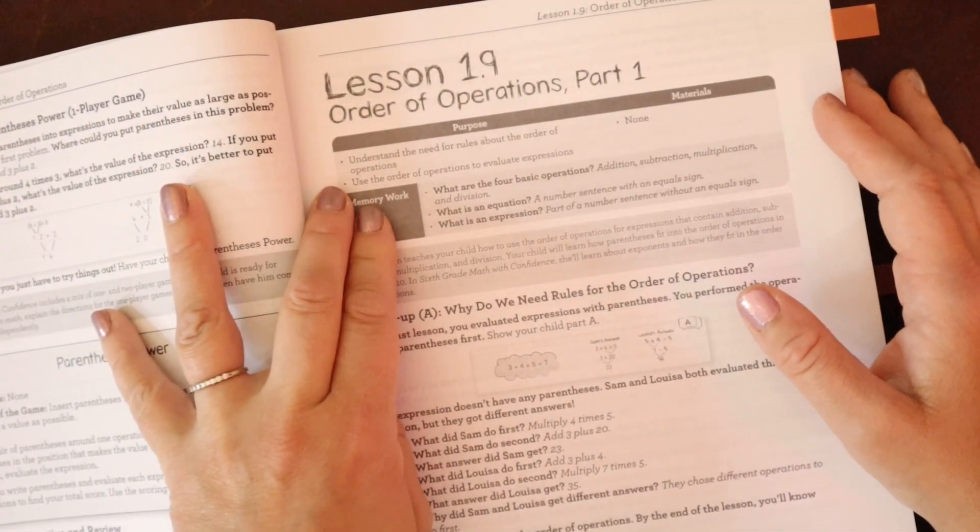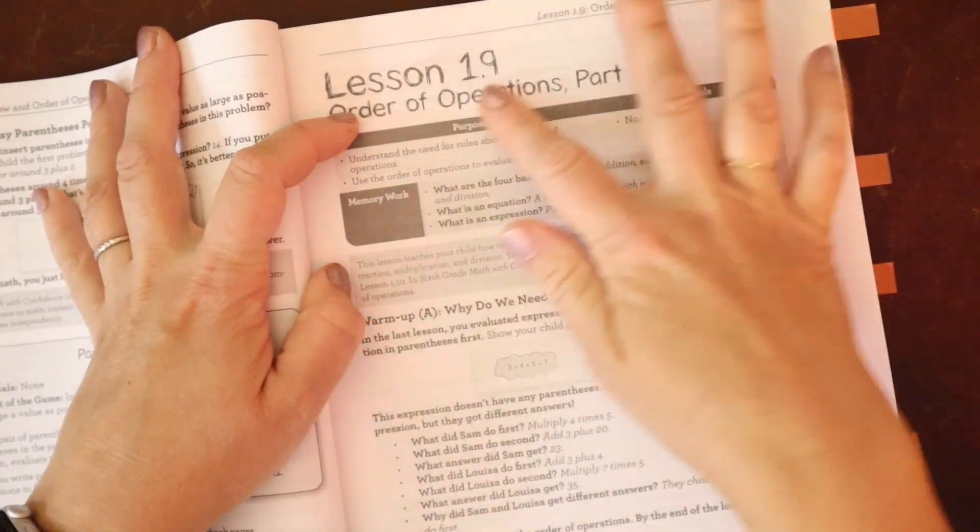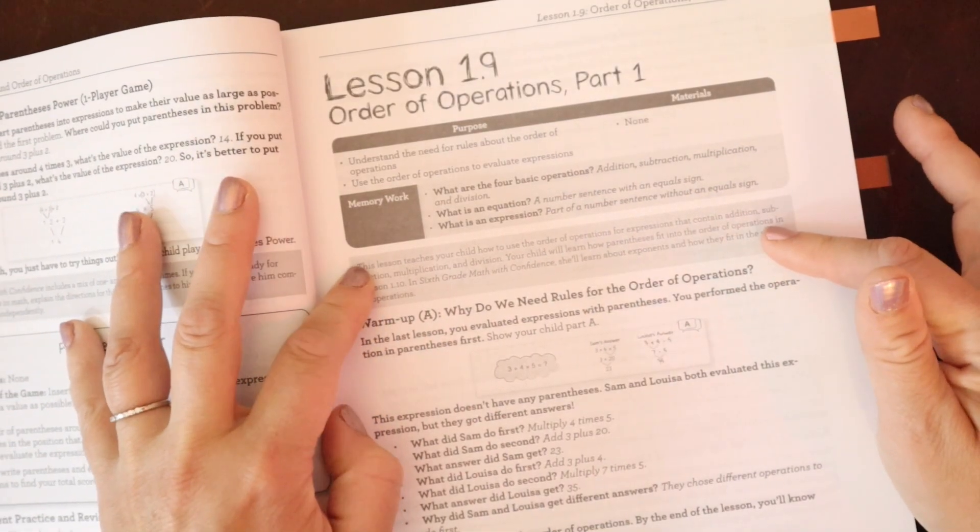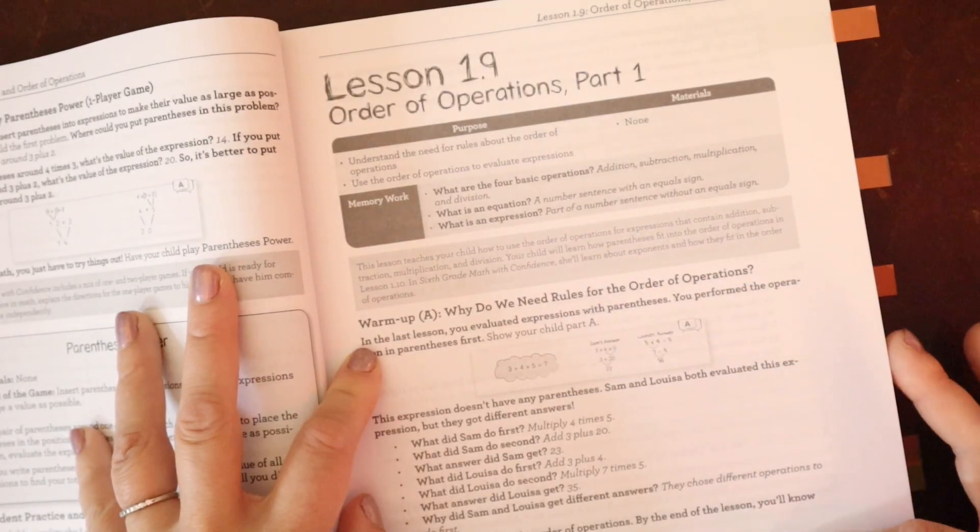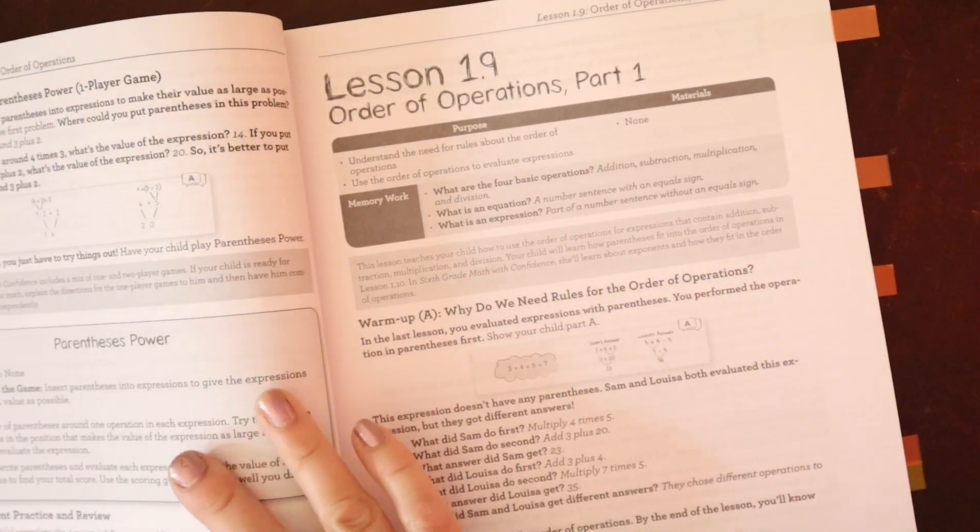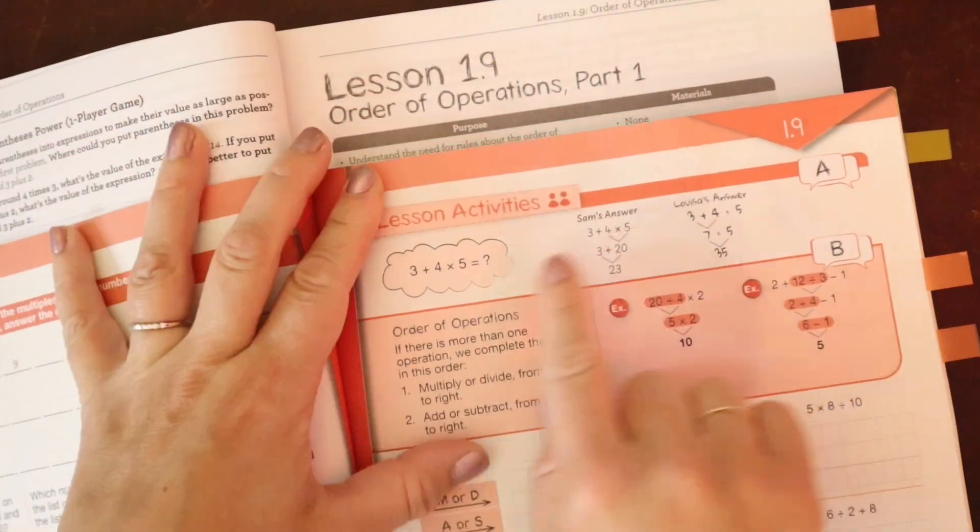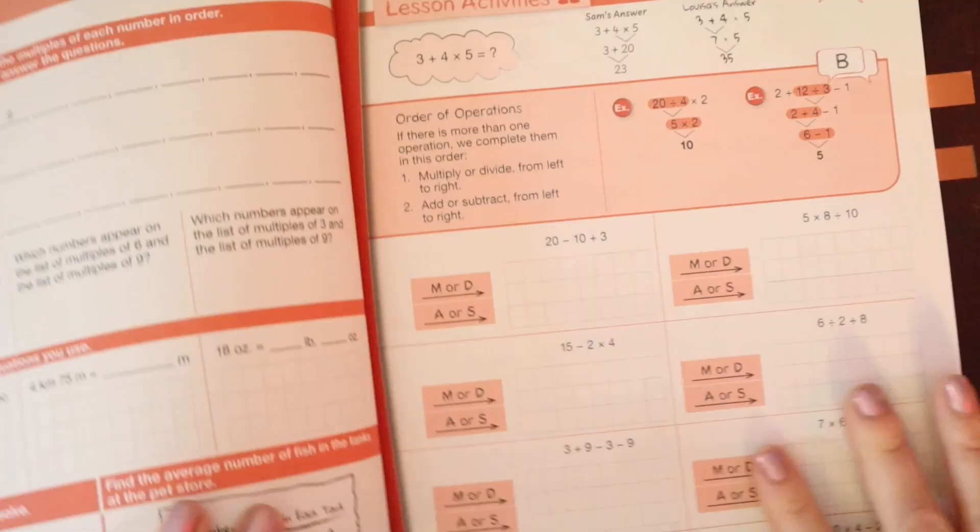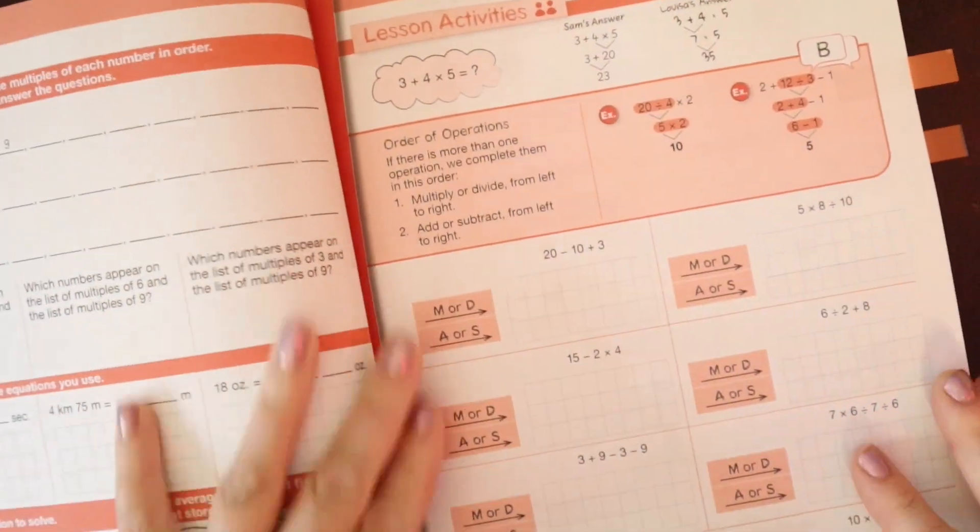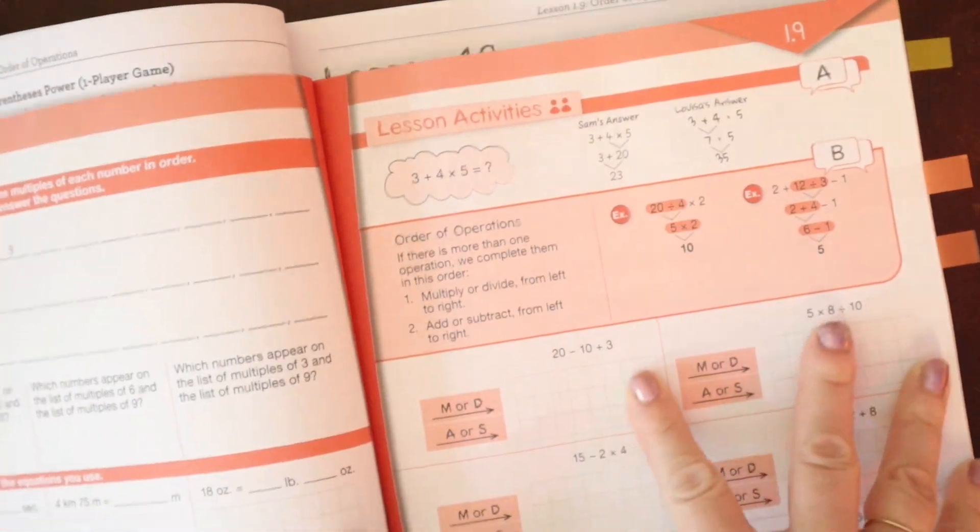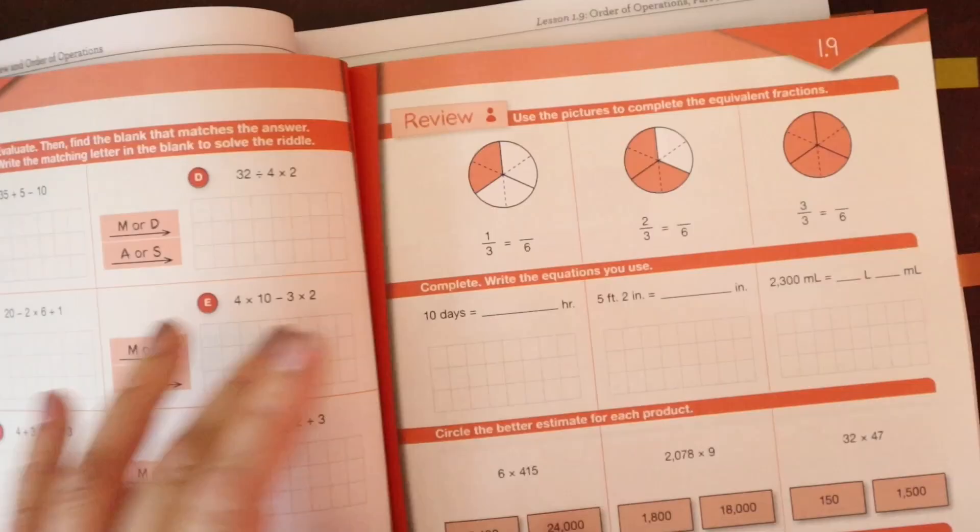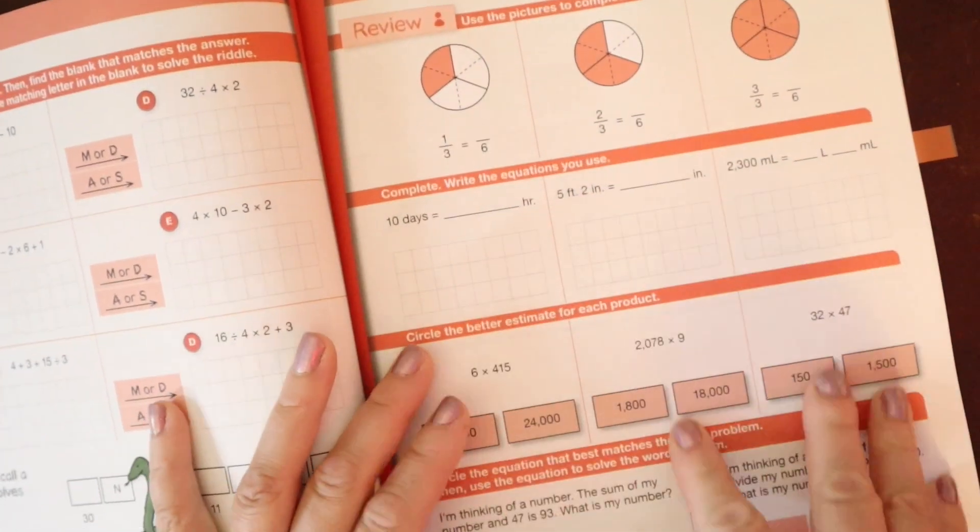So lesson 1.9 is Order of Operations, Part 1. And so all these lessons are divided up the same way. We have our callout box here with our purpose, our materials, and our memory work. Then you have a little gray box about kind of what this lesson is about for you. And then we move into the different sections of the lesson. So we have warm-up A, why do we need rules for the orders of operations? If we come over to the textbook for the student lesson, we have A, and that correlates with warm-up A here. And then you have B, and that goes with B here. And so again, these lessons, the pages, you're kind of doing this lesson activity page with your child. So there's three pages for each lesson. So you're doing this page with your child following the guide. Then your child has a practice page that they should be working on independently. And then there's a review page. This is your spiral review pulling in from previous learning.